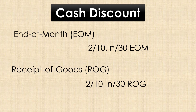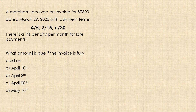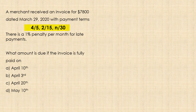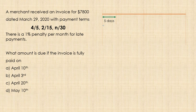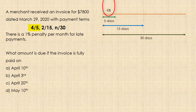Let's now solve some ordinary dating problems. A merchant received an invoice for $7,800 dated March 29, 2020, with payment terms 4/5, 2/15 net 30, and there is a 1% late penalty per month. We want to determine the amount required to pay off the invoice on each of these dates. Although not required, we can represent the payment terms in a timeline. The 4% discount applies if payment is made within 5 days.